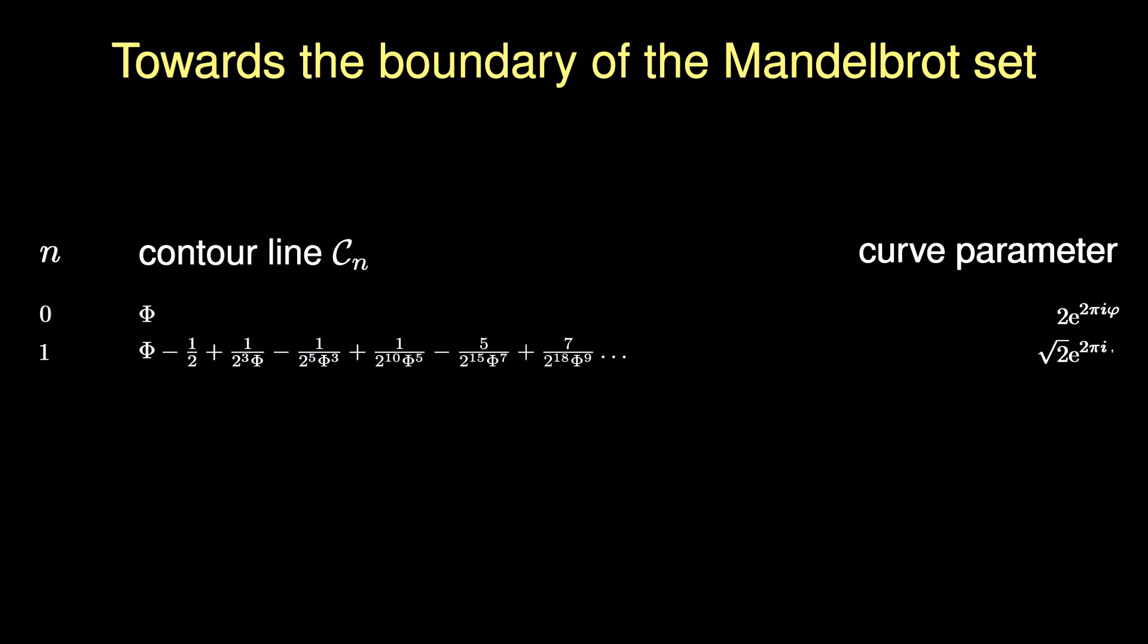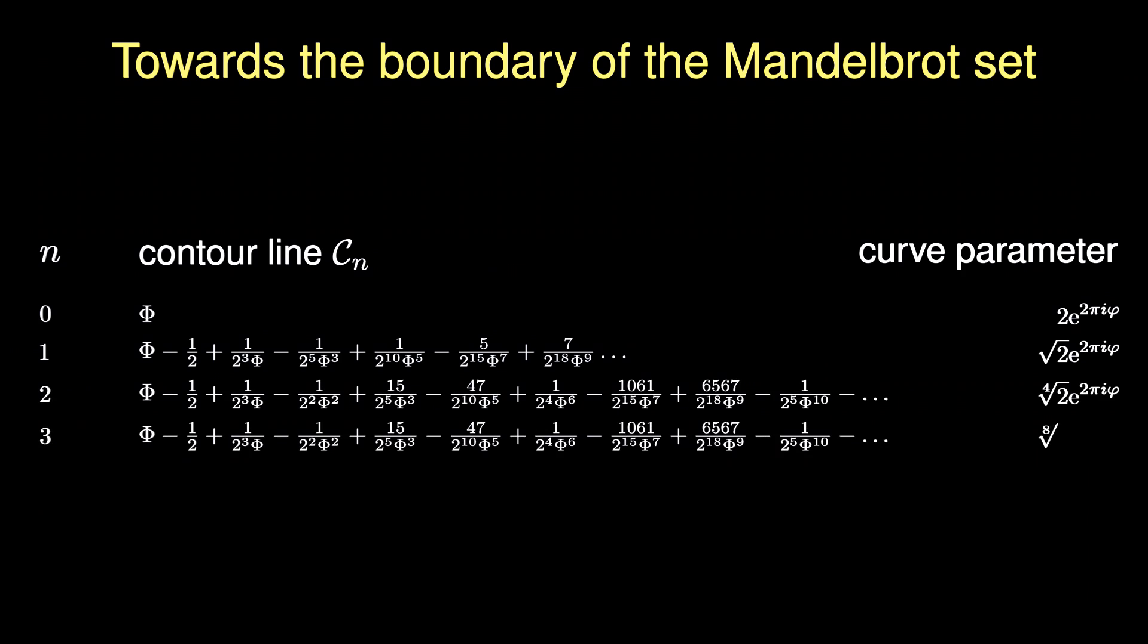Let us revisit the series expansion for the various contour lines. It is apparent that later series expansions agree on more and more terms. This is intuitively clear, as the small coefficients correspond to large arrows that shape the overall structure, while later the smaller coefficients refine the details. They converge to a final series that corresponds to the contour of infinitely many iterations, which is the boundary of the Mandelbrot set.